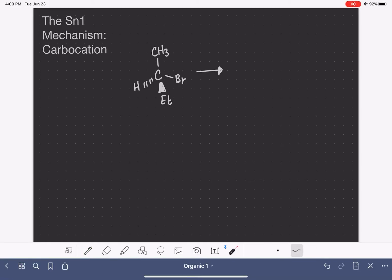The SN1 mechanism proceeds through or via a carbocation intermediate. A carbocation is just a compound that has a carbon atom with a full positive charge, not a partial positive charge, but a full positive charge.